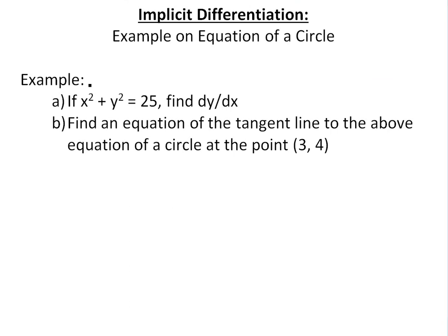So basically, this example has two parts. Part A states: if you have the equation of a circle x squared plus y squared equals twenty-five, find the derivative dy over dx. And then Part B says: find the equation of the tangent line to the above circle at the point three and four.